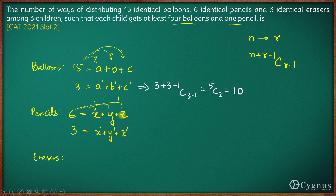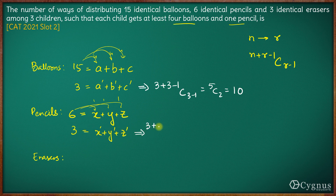So the question boils down to the same as what we did for balloons. The number of ways of distributing 6 pencils among 3 children with the restriction of each child getting at least one pencil is the same as distributing 3 pencils to 3 children without any restriction. So the number of ways comes out to be 3 plus 3 minus 1 C 3 minus 1, which is 5 C 2 equal to 10.